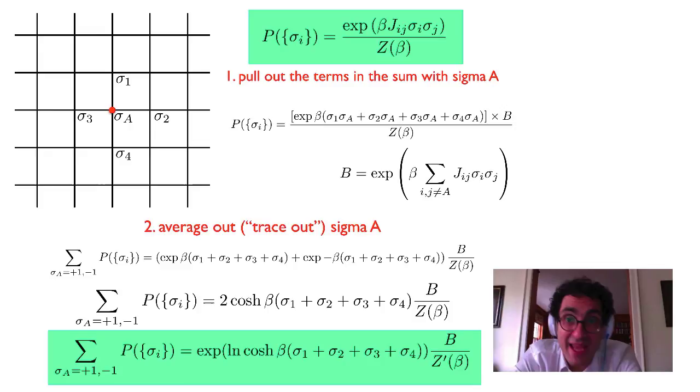So previously, you had a beta sigma 3 times sigma a. Now you have this sort of log cosh beta sigma 1. So by coarse graining, I've changed the model dramatically. By throwing out the information about sigma a, I've made the functional form of the model really different. And in fact, somewhat complicated.